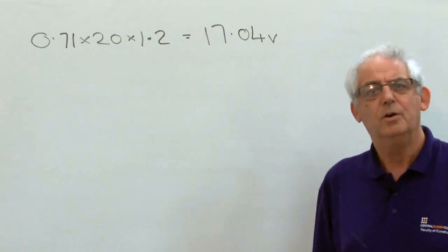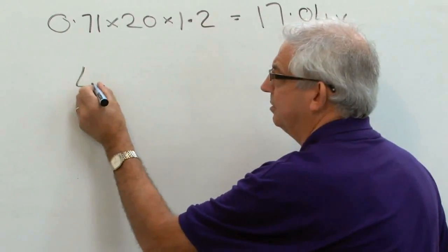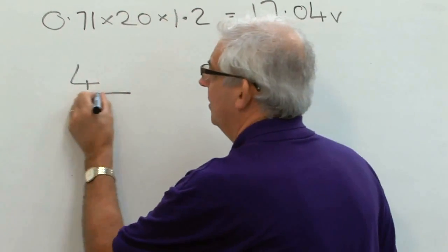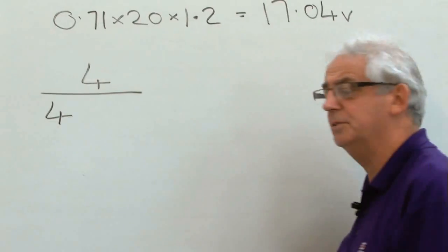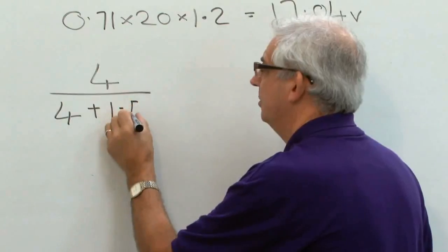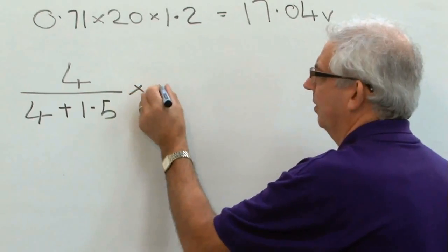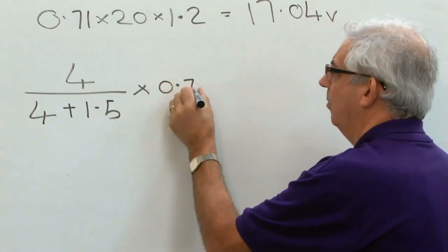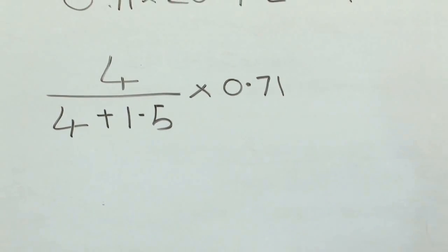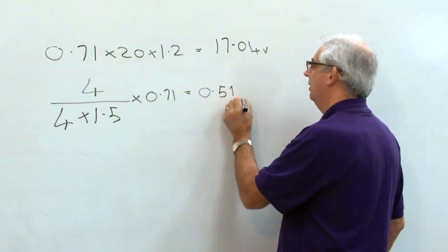It's quite a simple calculation. All I need to do is to divide the cross sectional area of the line conductor by the cross sectional area of the line conductor plus the cross sectional area of the CPC. I then need to multiply it by my R1 and R2 value which I've got there. That's going to come out at around 0.51 ohms.